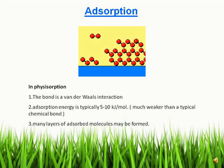That is one characteristic of physisorption. Another characteristic is adsorption energy, which is typically 5 to 10 kilojoules per mole. That is much weaker than a typical chemical bond, so the adsorption energy is very low — between 5 and 10 kilojoules per mole. Another characteristic is that many layers of adsorbed molecules may be formed, so the adsorption may be of polymolecular thickness. These are the characteristics of physisorption.